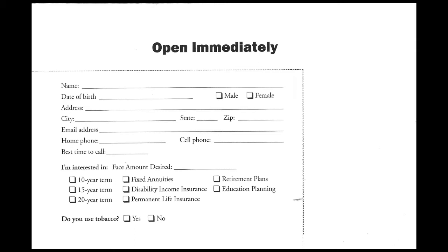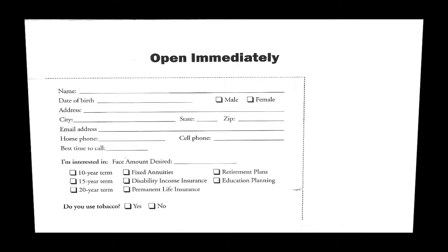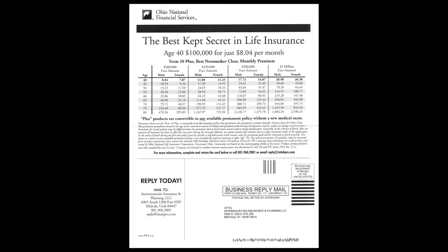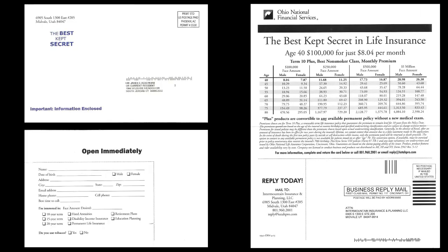Here it is. Take a look at that. That's the front. This is the back. And here is the inside. So, it's a self-mailer. It comes from — who knows when you see it. It just says "the best kept secret" and "important information enclosed" as the teaser copy. As you can see on the back side, there's some kind of form to fill out, and then when you open it up, you find out who it's from and what they're selling. You tell me.